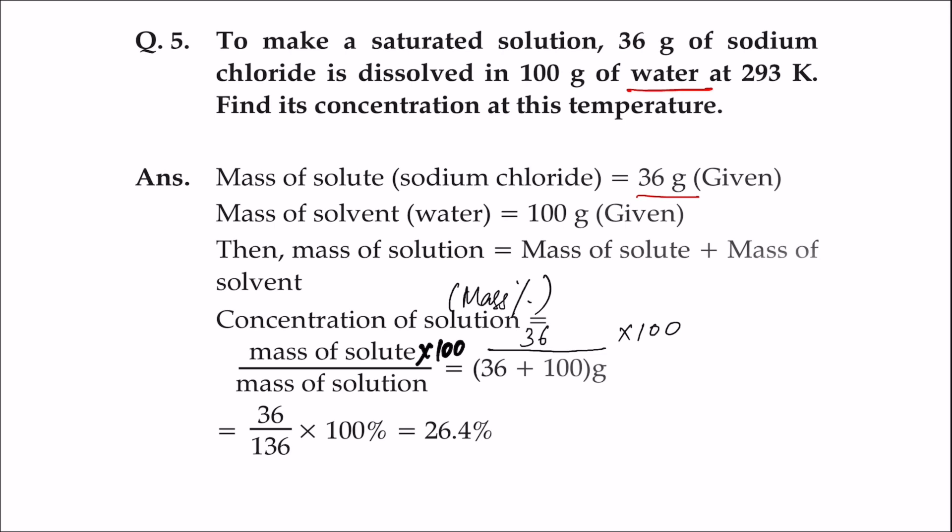Mass of solute is 36 grams. Mass of solvent is 100 grams. Since the mass of solute and solvent are given, we will find the concentration in terms of mass percent. Mass of solute is 36 grams.